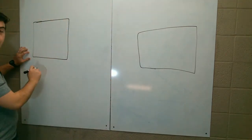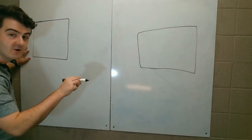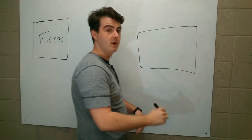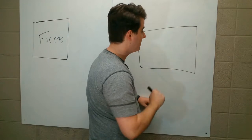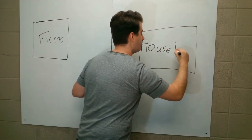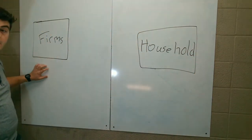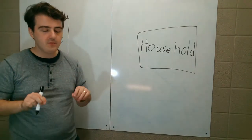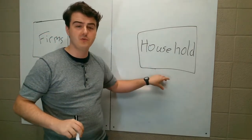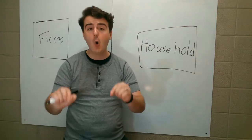So if we're going to be showing the relationship between businesses and people, well, in our model, we're going to need some businesses and some people. Over here, we are going to put our businesses. In the field of economics, we call businesses firms. And all the way over here, we are going to put our people. And specifically, we are going to call them households.